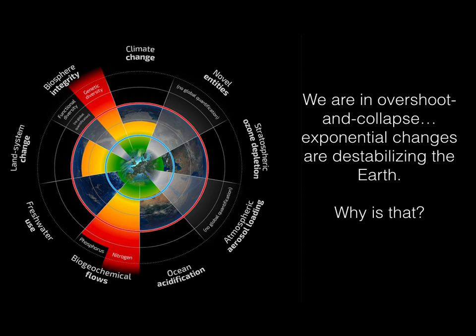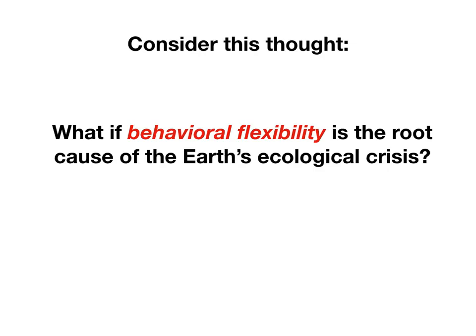So why have rapid changes in human systems had such a profound effect on the Earth overall? I want to offer a very provocative idea: what if behavioral flexibility is the root cause of the Earth's ecological crisis? Normally we hear that climate change is caused by the burning of fossil fuels, but that doesn't go deep enough to the root causes. Let's dig into this.